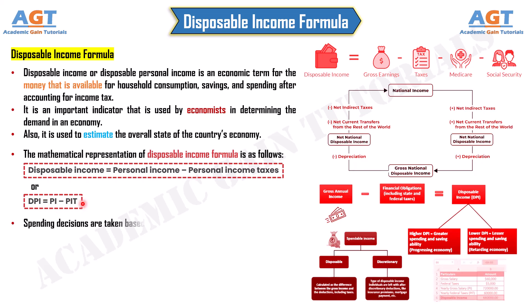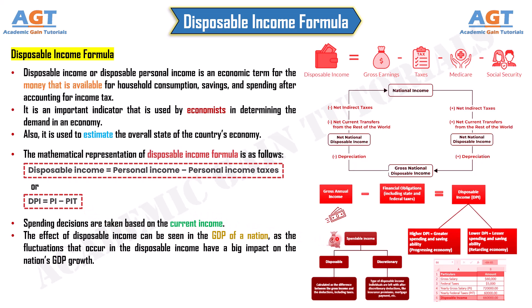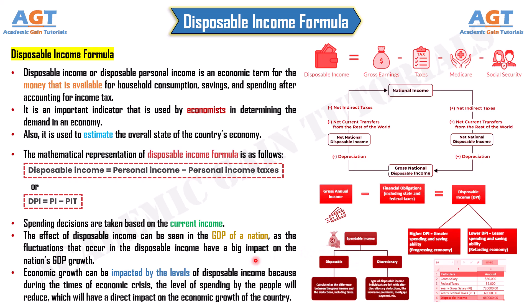Spending decisions are taken based on current income. The effect of disposable income can be seen in the GDP of a nation, as fluctuations in disposable income have a big impact on a nation's GDP growth.